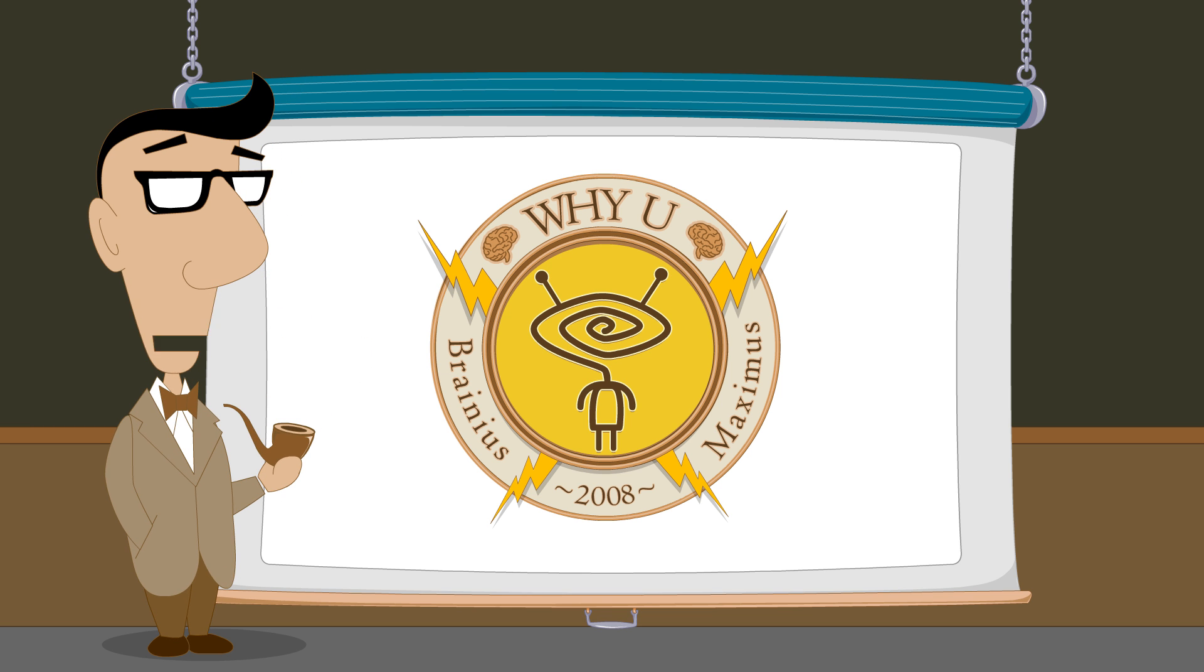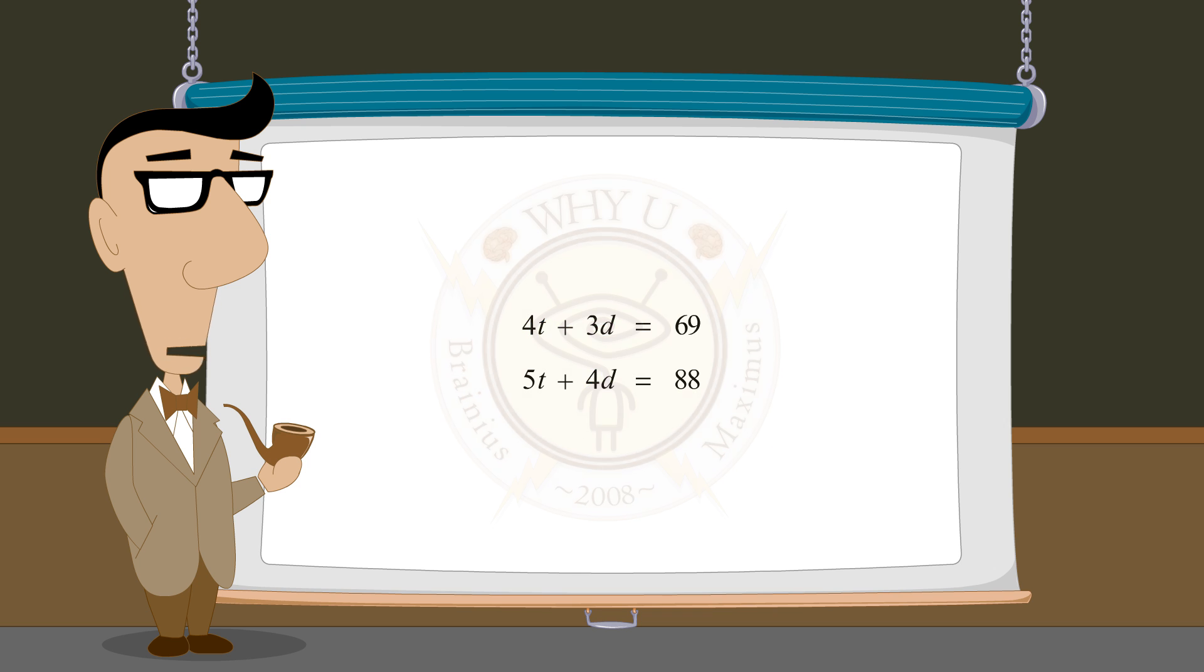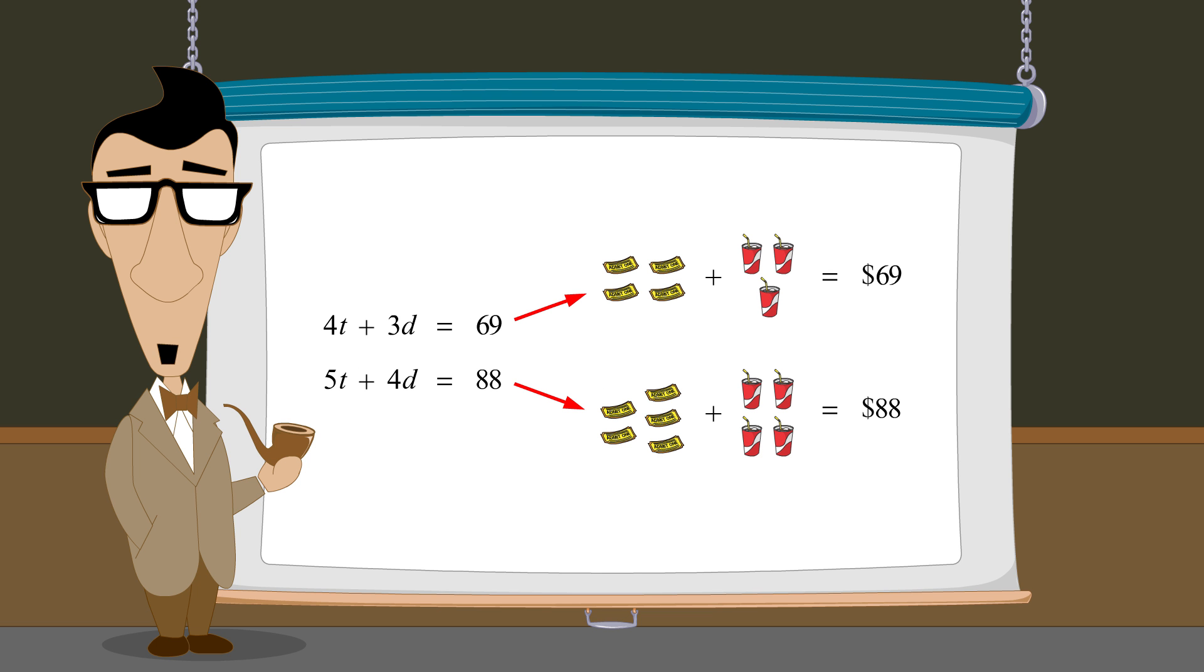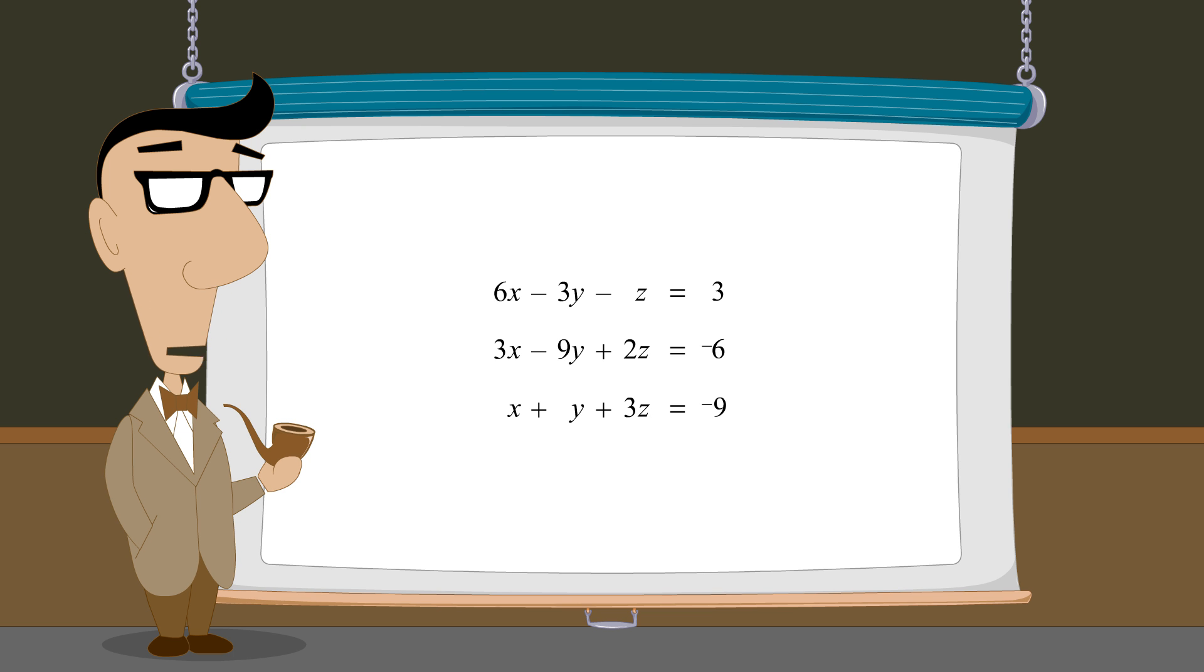When we first introduced systems of linear equations, we initially studied systems of two linear equations in two variables and we saw how these systems could be used to model and solve real-world problems. We then looked at systems of three linear equations in three variables, but what type of real-world problems can these systems model and solve?